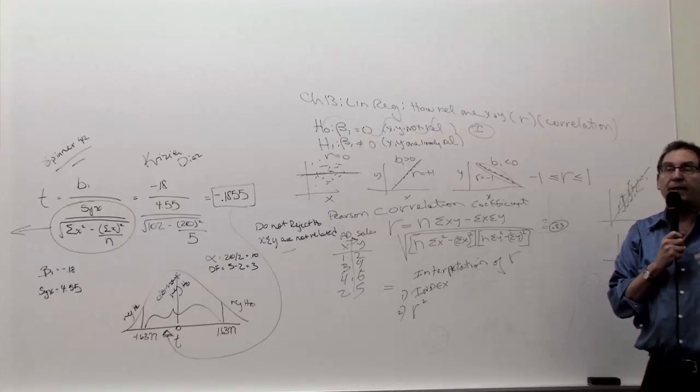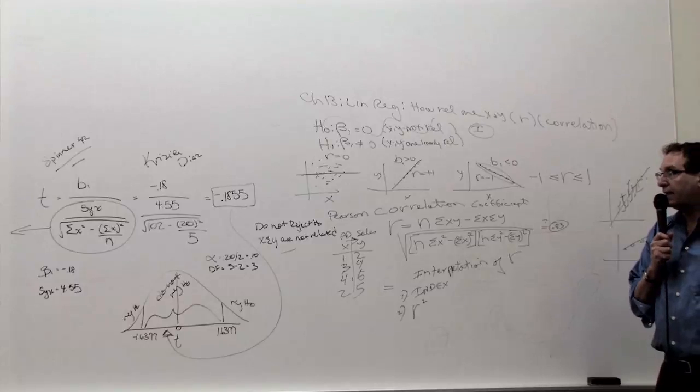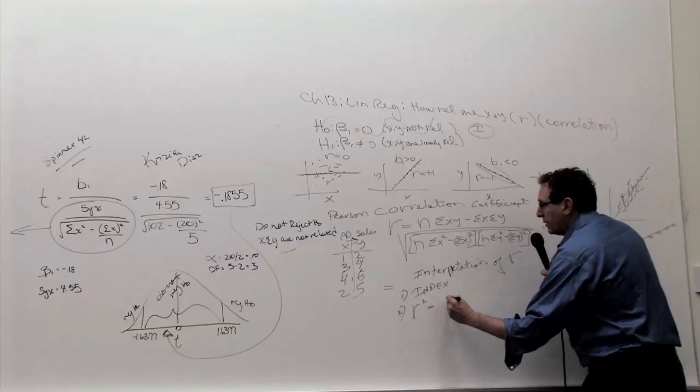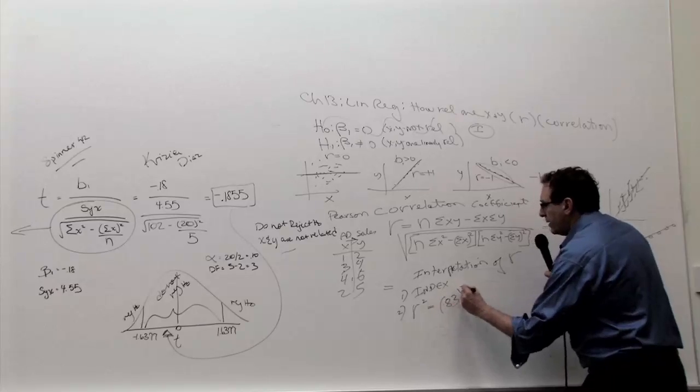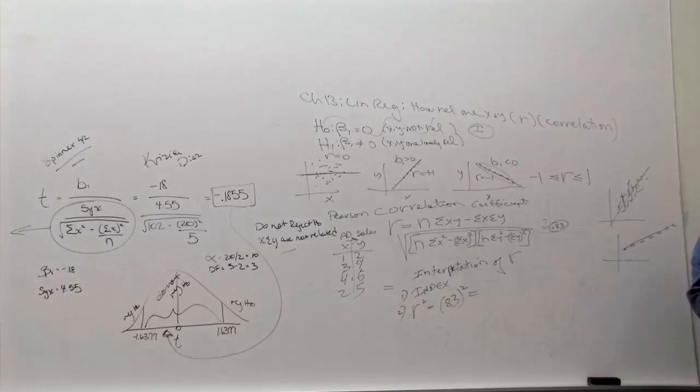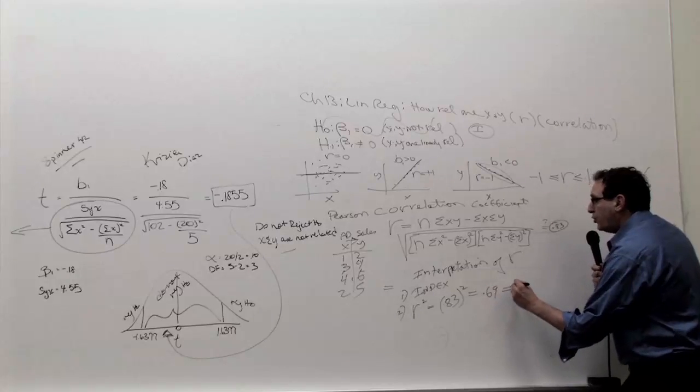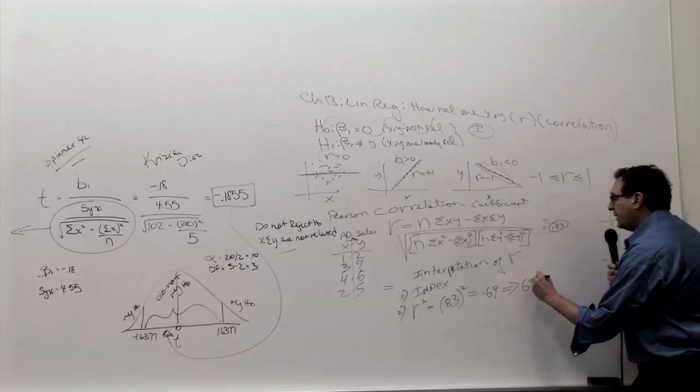Now, R squared happens to be a six-point formula on the test, but it's the easiest formula of the entire term. You simply do R times R. So it's going to be 0.83 squared. 0.83 times 0.83 is point what? 69. And that you change into a percentage: 69%.